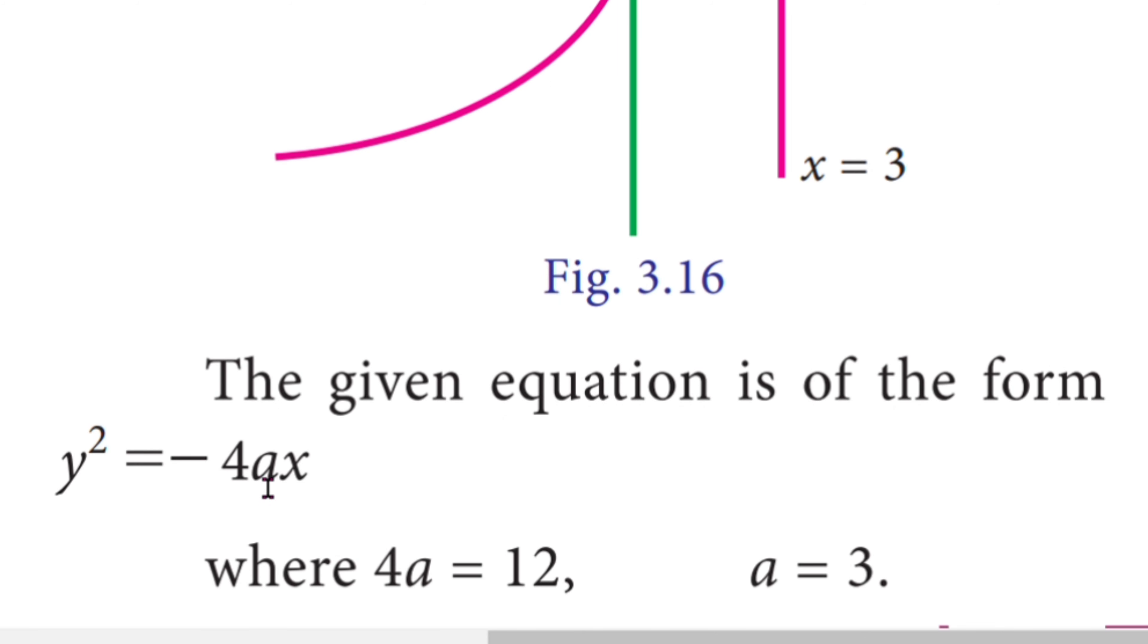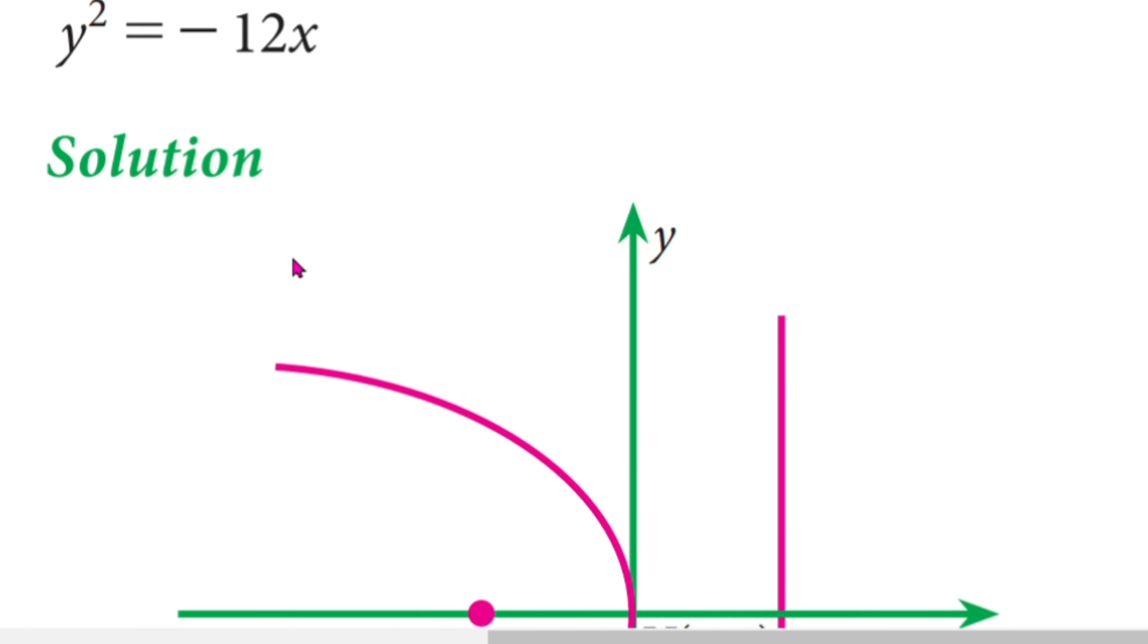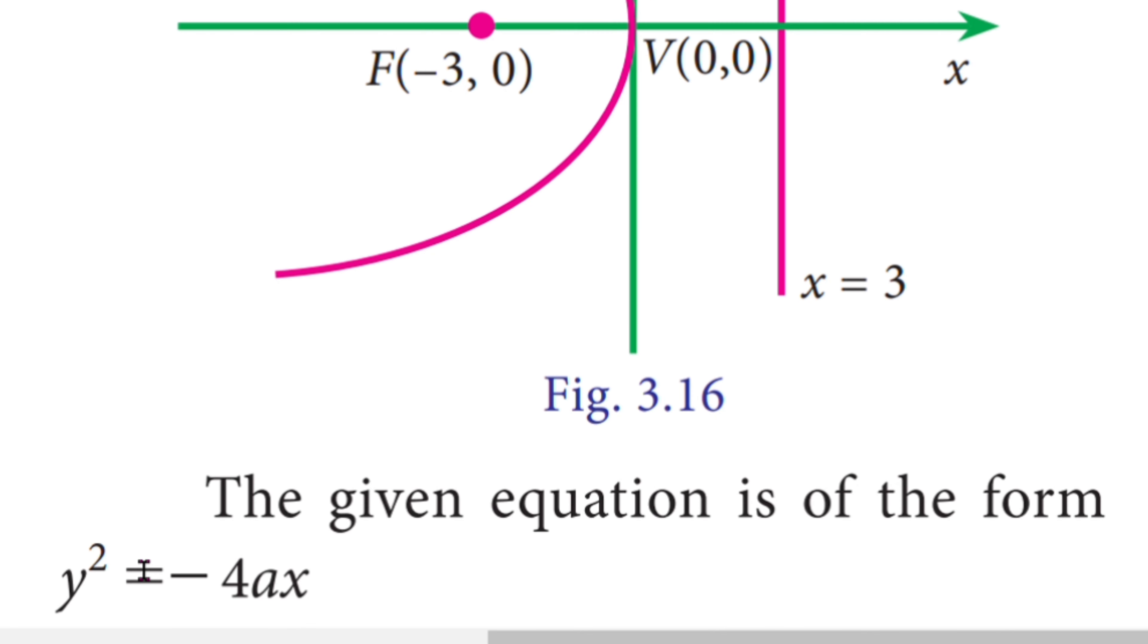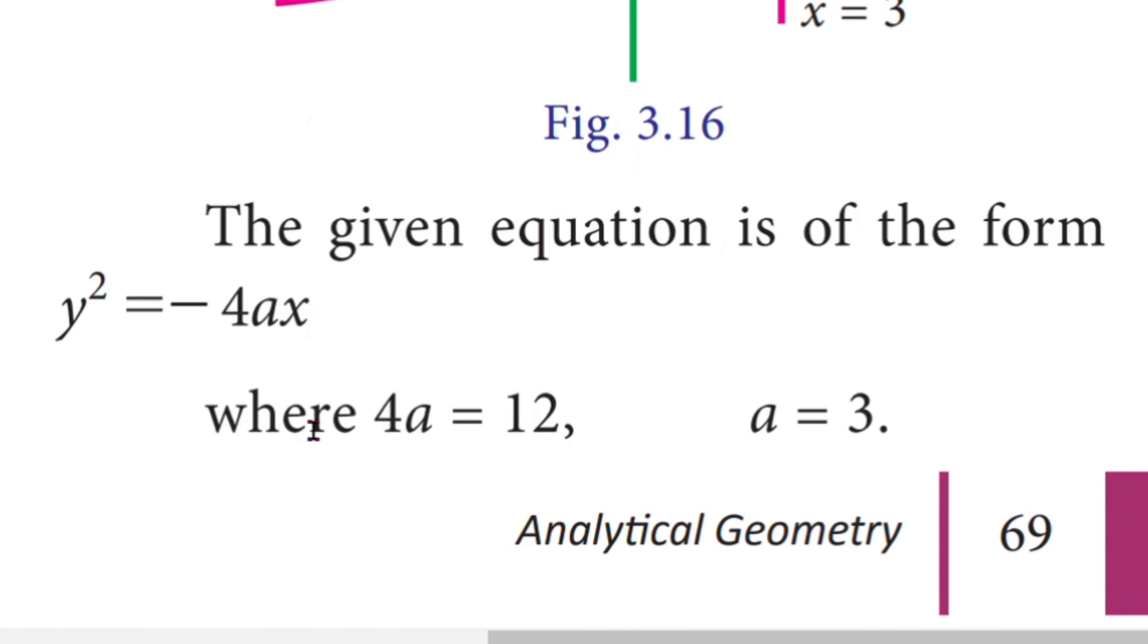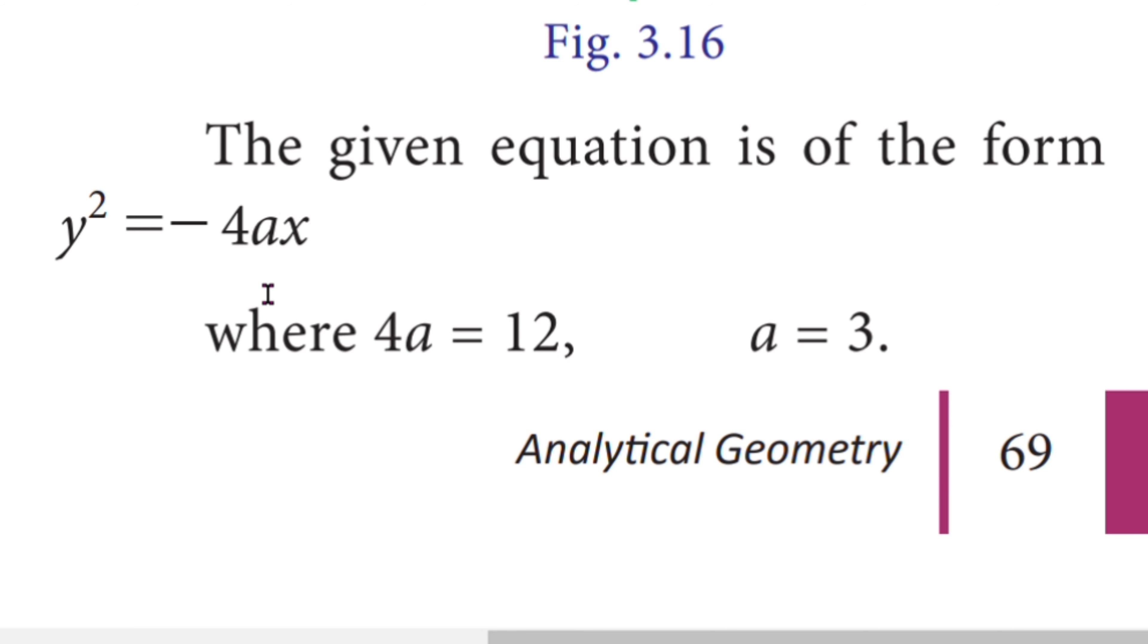The general form: y² = 4ax opens rightward, while y² = -4ax opens leftward. The given equation y² = -12x can be compared with y² = -4ax, so 4a = 12.